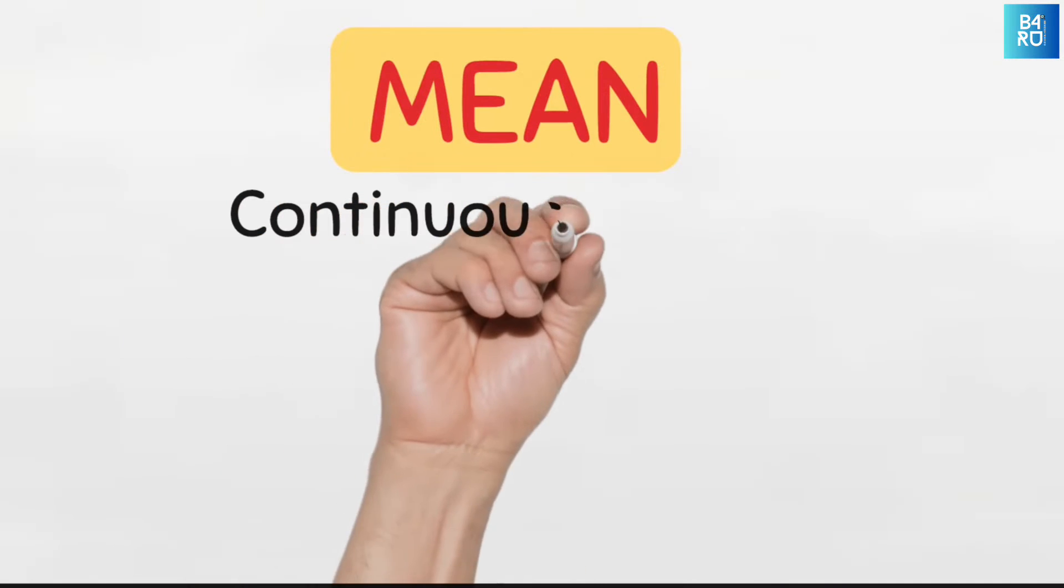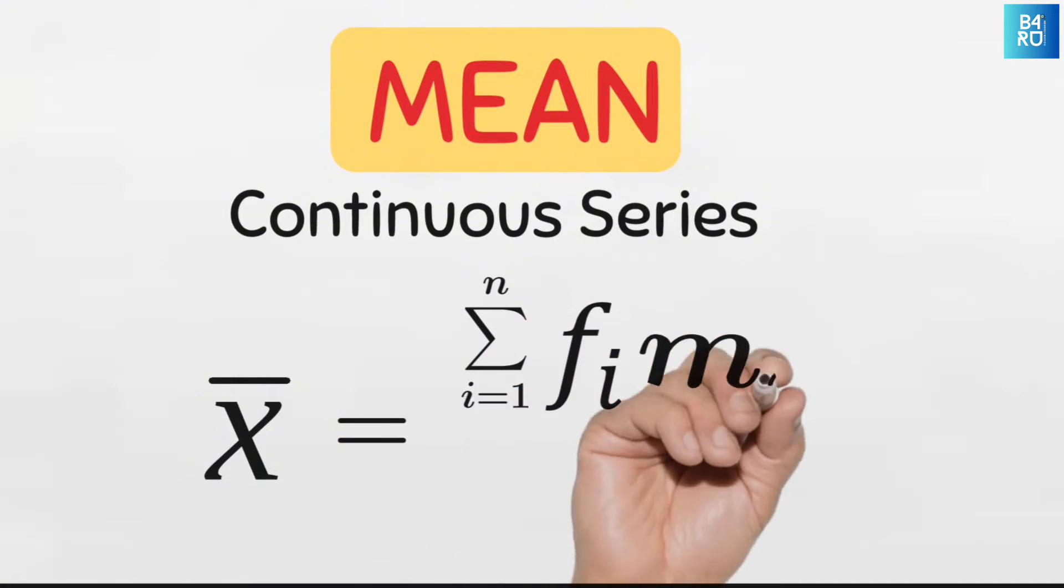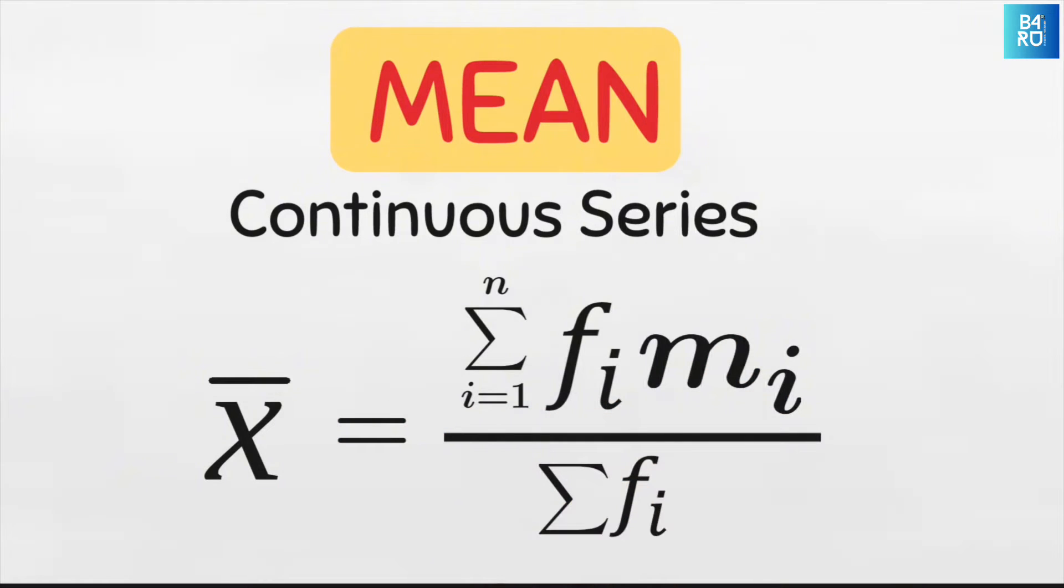The mean of a continuous series data set is given by the formula x̄ equals sigma from i equals 1 to n of f sub i multiplied by m sub i divided by sigma f sub i.